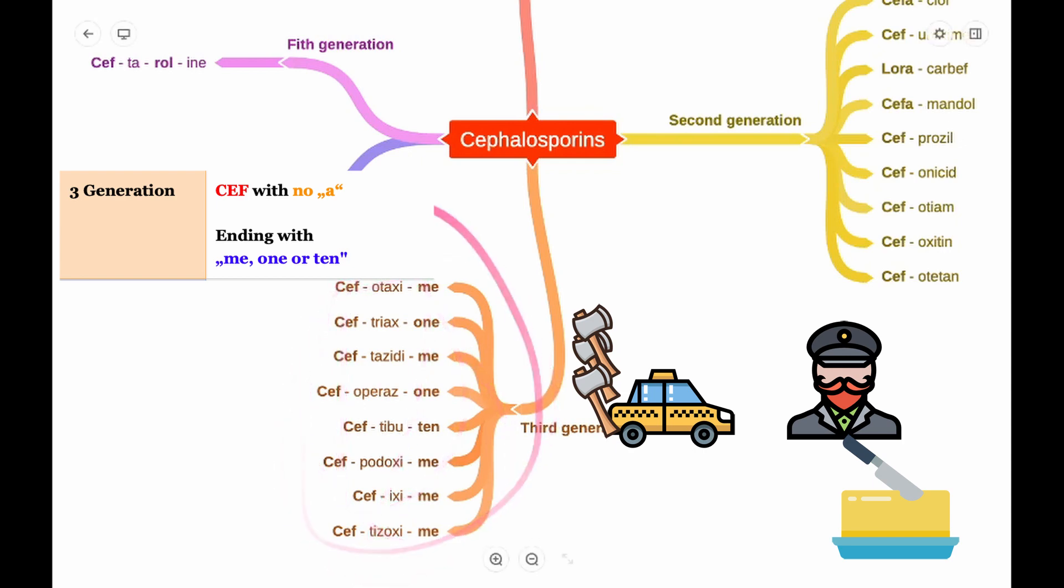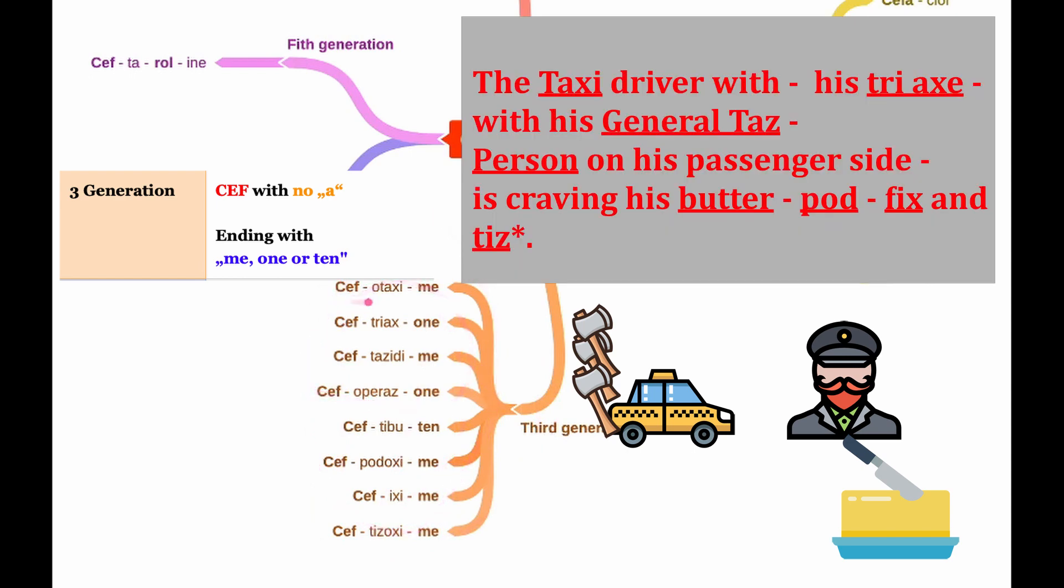To remember all this generation, think of the sentence like the taxi driver, cefotaxime, with his triax, ceftriaxone, with his General Taz, ceftazidime, person, cefoperazone, on his passenger side is craving his butter, ceftibutane, pot, cefpodoxime.